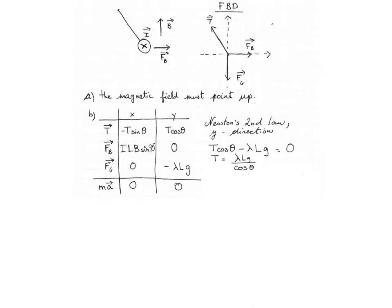In these problems, the strategy is always to solve for something and replace in Newton's second law in the x direction. In this case, we don't really care about the tension. So solving for tension, we get lambda Lg over cosine theta, which we will replace in Newton's second law in the x direction.